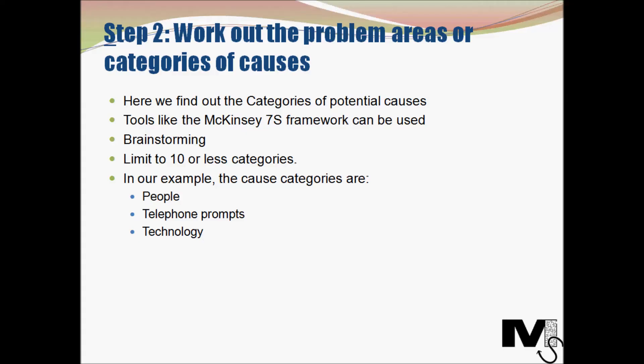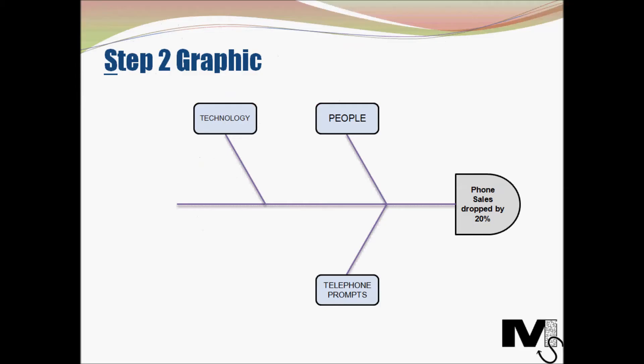However complex the process or however large the organization, it is recommended to limit yourself to fewer than 10 categories — keep it simple, otherwise it gets too complicated. In our example, the causes have been identified by management as: people, telephone prompts, and technology. We map these in the skeletal structure — a main stem with branches for people, telephone prompts, and technology.